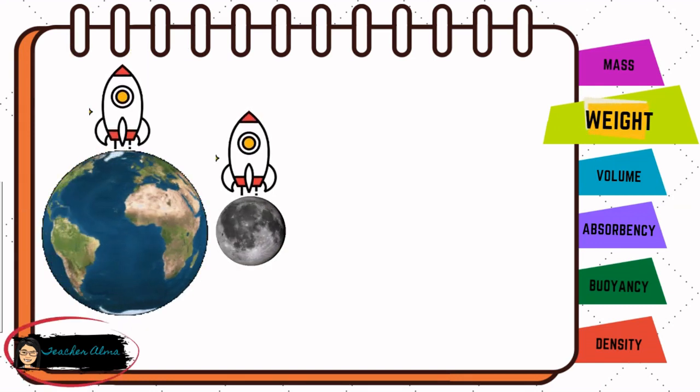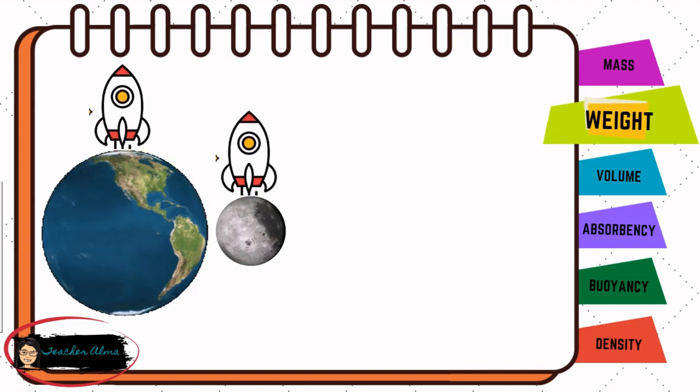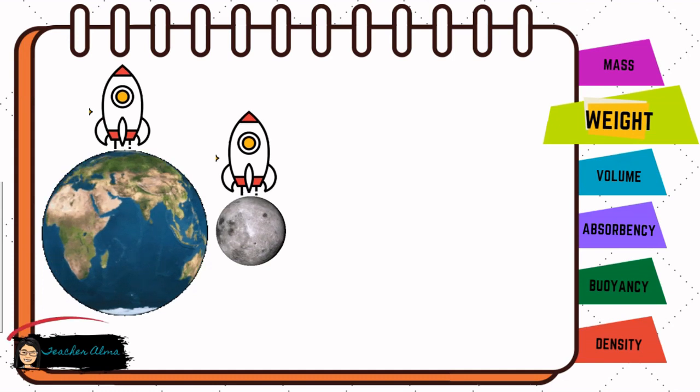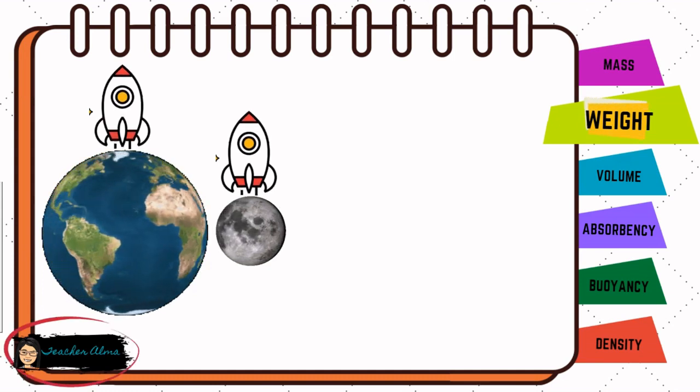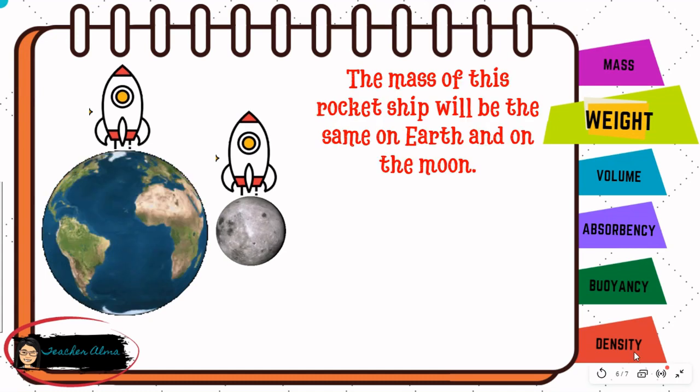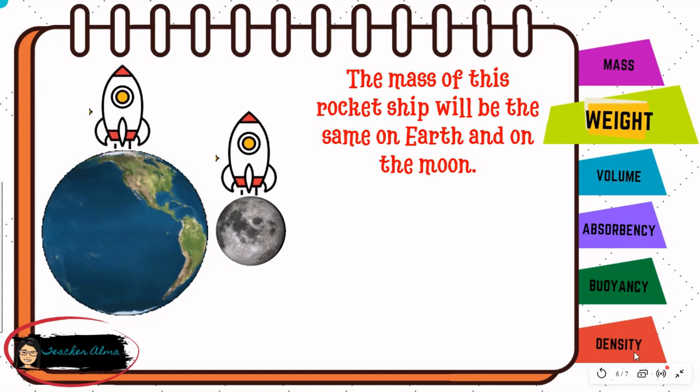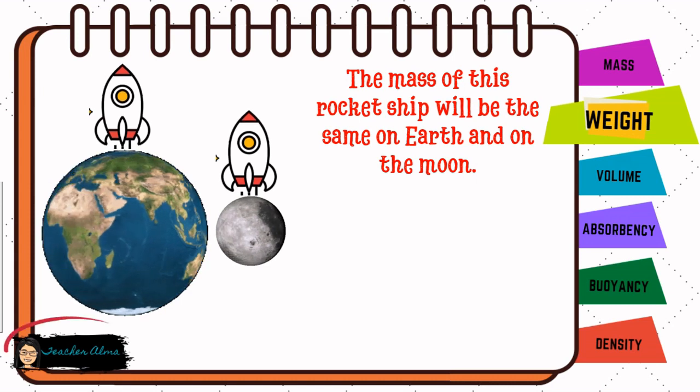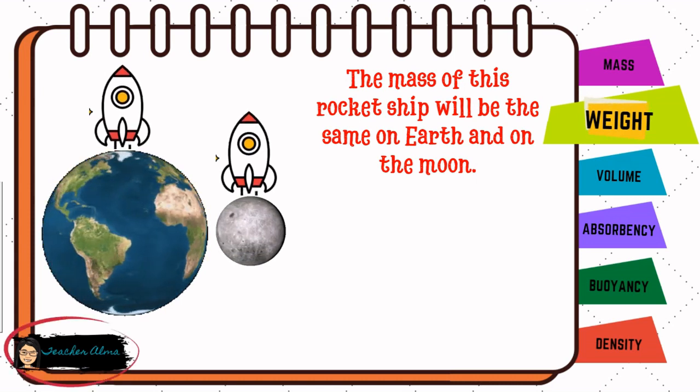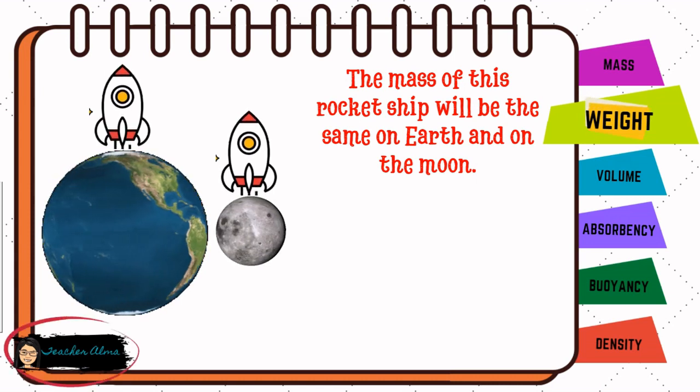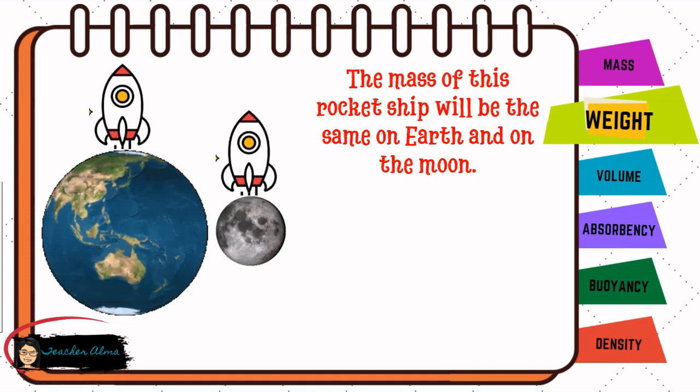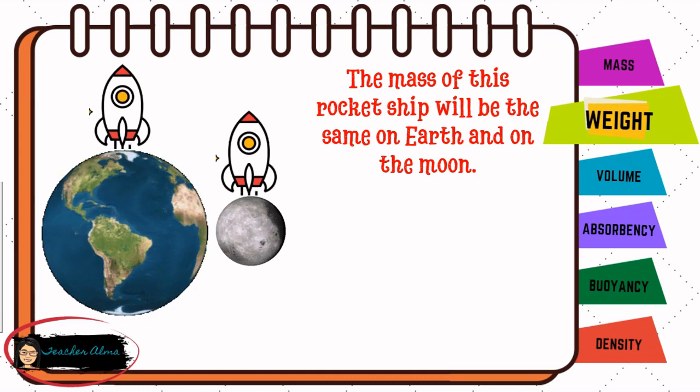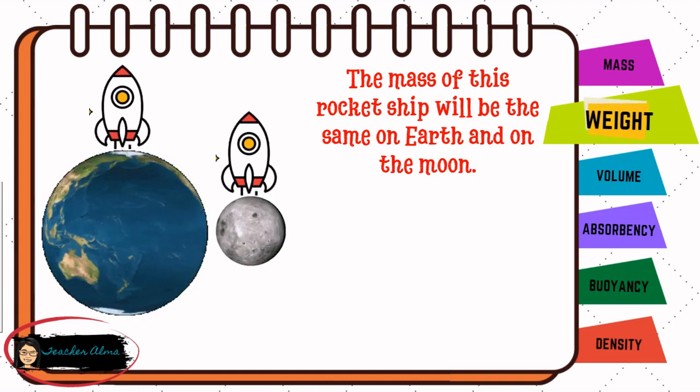Let us take a look at this example. Remember that the mass of an object will remain the same regardless of its location. The mass of this rocket ship will be the same on Earth and on the Moon. If the mass of the rocket ship on Earth is 2.3 million kilograms, then it will still be 2.3 million kilograms on the Moon.